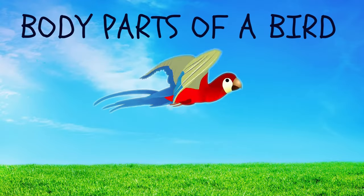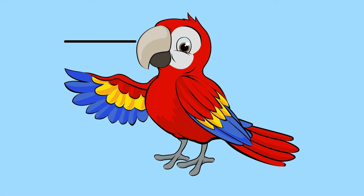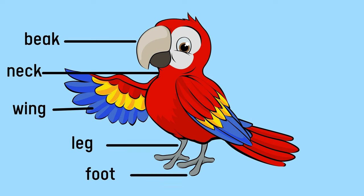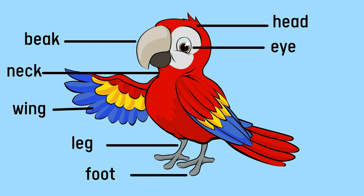Parts of a bird. Beak. Neck. Wing. Leg. Foot. Head. Eye. Feathers. Tail.